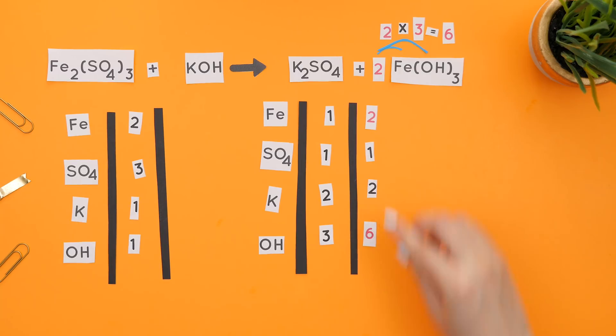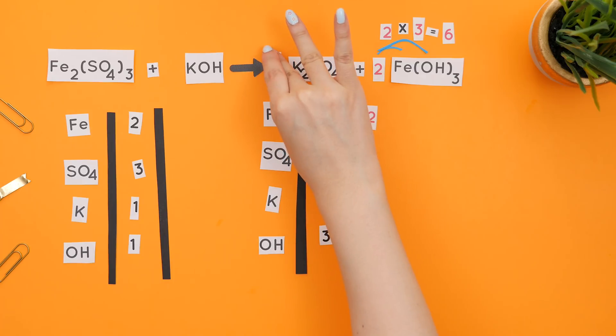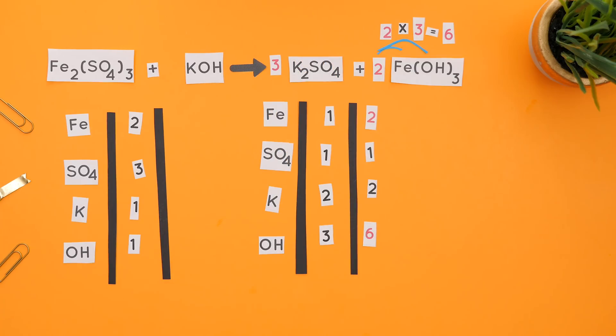SO4 and K did not change on the product side. Now we'll balance the SO4s by placing a three in front of potassium sulfate. Distribute the three, and we now have six Ks and three SO4s.